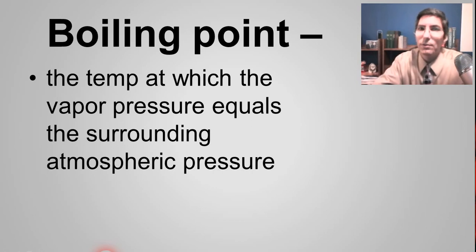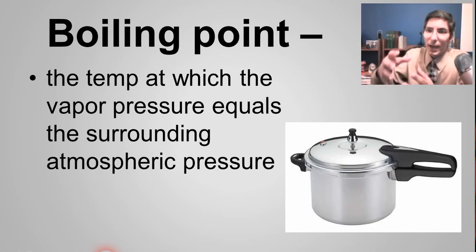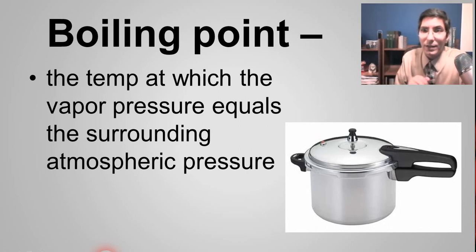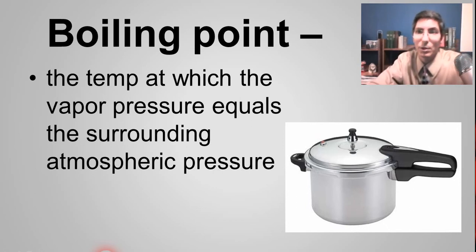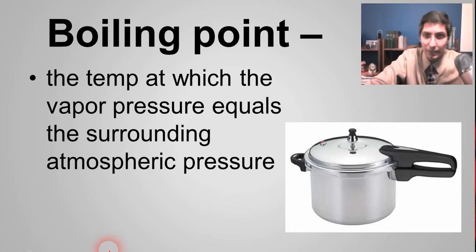As you heat something up, the molecules move faster and faster, and more of them can escape and become a gas. As you raise the temperature, you raise the vapor pressure of the liquid. You can get that vapor pressure so high it equals the surrounding atmospheric pressure — which at sea level on a normal day is about 760 millimeters of mercury. That's the boiling point: the temperature where vapor pressure equals surrounding atmospheric pressure.